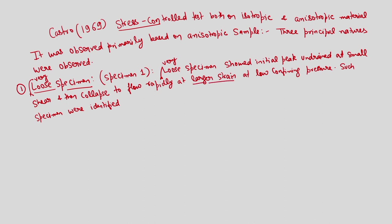The axial strain becoming larger means the material is undergoing continuous flow at very high shear strain, with loss of confinement. Collectively, the samples were identified as liquefiable — these are samples actually identified as liquefiable because they critically resemble a state favorable to flowing consistency. The confining pressure is very low, the axial strain is very high, resembling a state where flow has occurred in the material.